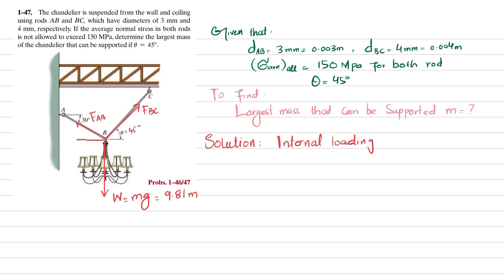The angle for rod AB with the horizontal is 30 degrees. F_BC has two components: F_BC·cos(45°) in the horizontal direction and F_BC·sin(45°) in the vertical direction. Similarly, F_AB has a horizontal component of F_AB·cos(30°) and a vertical component.